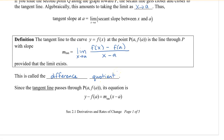And since the tangent line passes through the point a, f of a, we can write the equation of the line by putting in m-tangent, which is this formula here. And then we can put our points a and f of a into point-slope form. Now, like I said, when we plug in x as a, we're going to get zero over zero. So how are we actually going to find the slope of the tangent line if the whole thing is zero over zero? Let's take a look at an example.